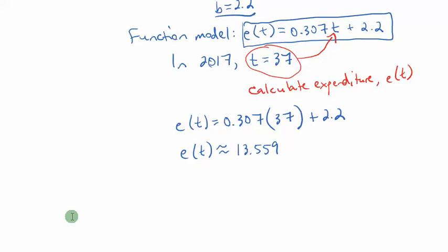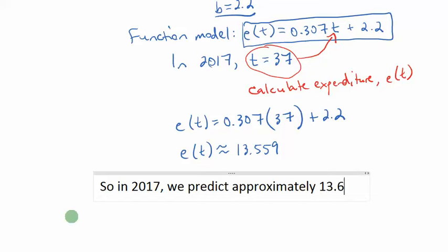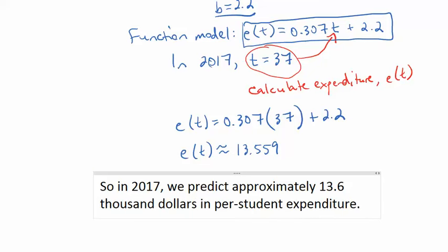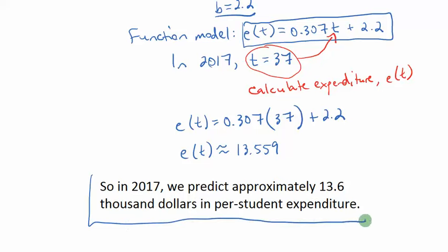So now let's answer the question. So in 2017, we predict approximately 13.6 thousand dollars in per student expenditure. Because I know t is 37, of course that means the year is 2017, and e of t, which is the expenditure, is approximately 13.6, and that is in thousands of dollars. And that's how you do it.